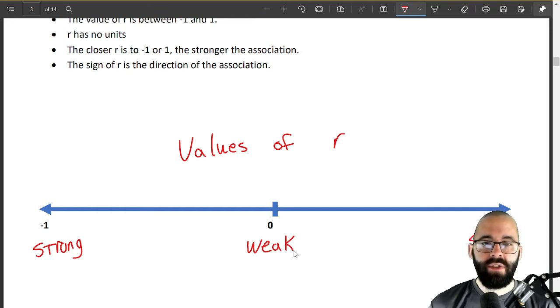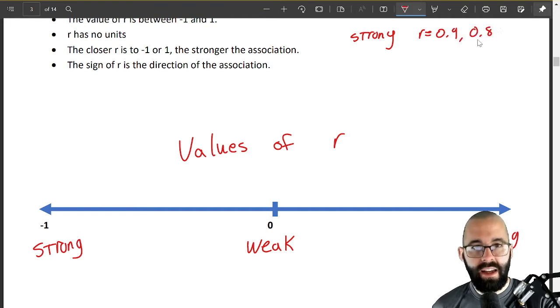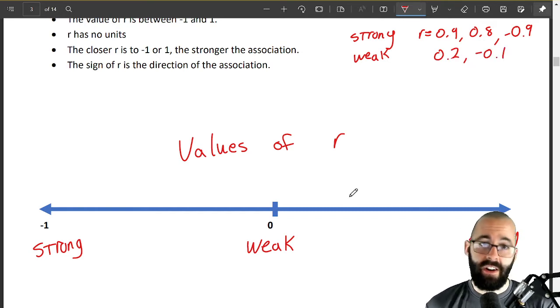All right, it's weak if it's near zero. So again, some examples of strong correlation would maybe be r equals 0.9, you know, 0.8, negative 0.9. These are all examples of strong correlation.